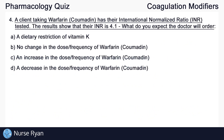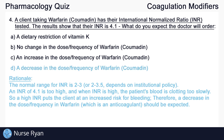Question number four: A client taking warfarin has their international normalized ratio or INR tested. The results show that their INR is 4.1. What do you expect the doctor will order? The answer here is D, a decrease in the dose or frequency of warfarin. The normal range for INR is about 2 to 3 or 2 to 3.5. An INR of 4.1 is definitely too high and when INR is high the patient's blood is clotting too slowly, putting the client at an increased risk for bleeding. Therefore a decrease in the dose or frequency of warfarin should be expected.